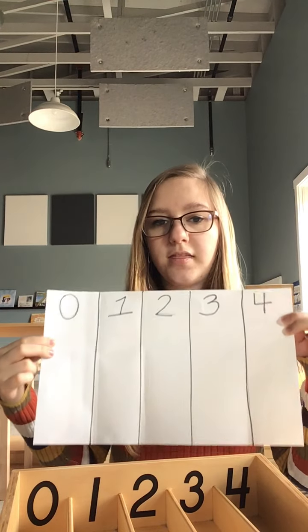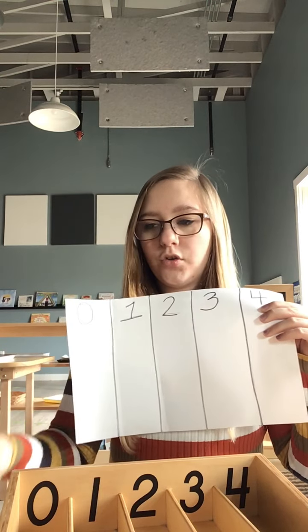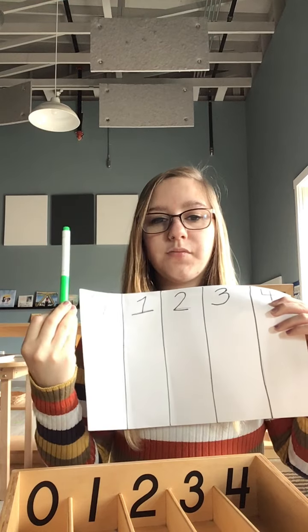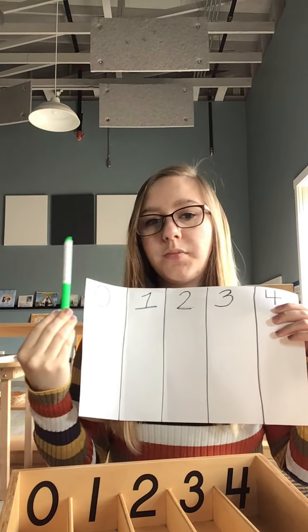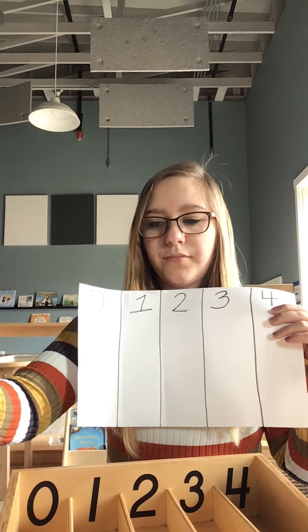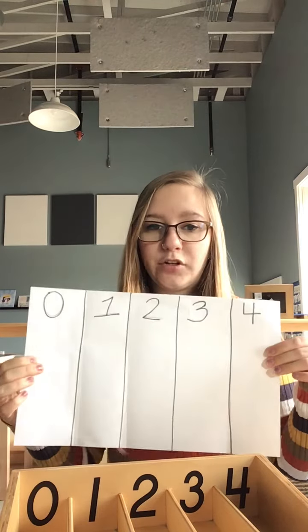And then what you'll need for the spindles is anything that represents the shape of a spindle. So this could be a marker, it could be some sort of silverware, it could be a colored pencil, maybe a long crayon, a q-tip, anything that can represent the size of a spindle.